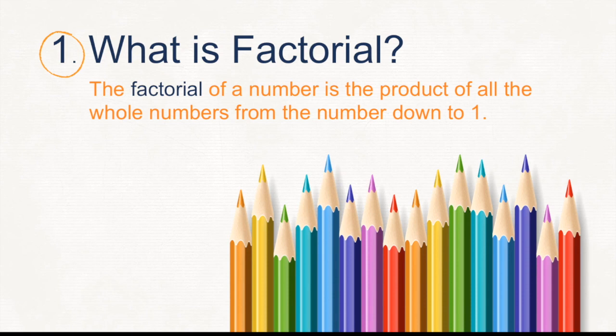Now what is factorial? Factorial of a number is the product of all the whole numbers from the number down to one. For example, 5 factorial. This is the symbol that we use to denote factorial, like the exclamation point we use in English. So 5 factorial is equal to the product from 5 down to 1. So it is 5 times 4 times 3 times 2 times 1. When you get the product, it is equal to 120.